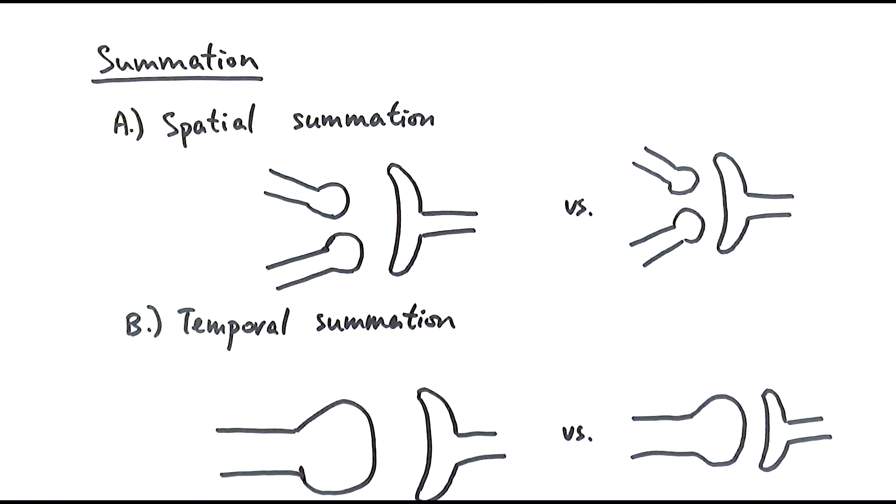One of them is called spatial summation. In spatial summation, what we mean by that is when there are multiple neurons that are connected to one single synapse to the next one.